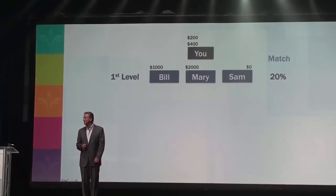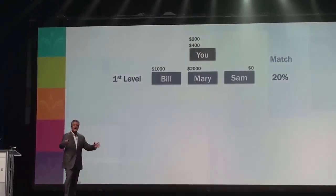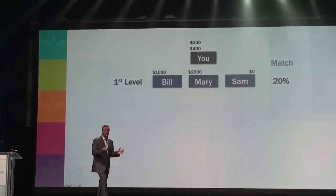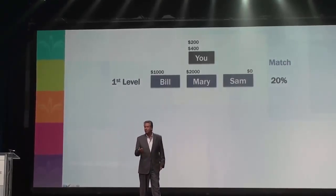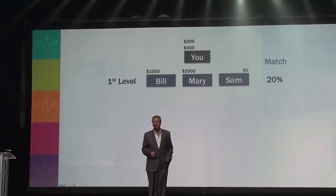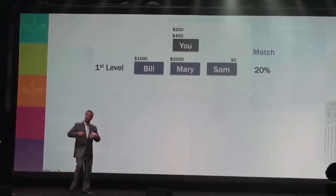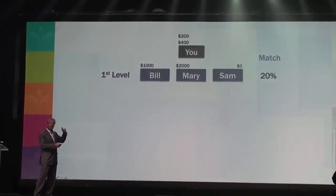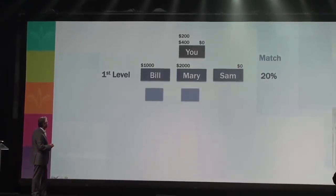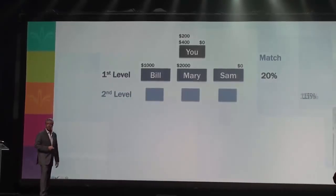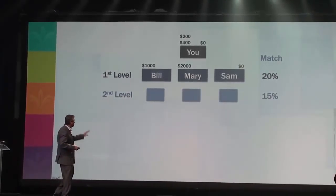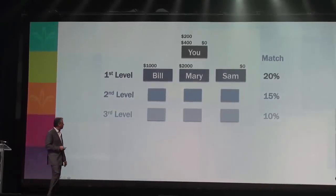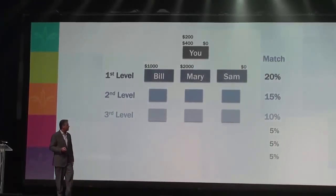Is there any limit to the number of people you can personally sponsor? No. If you personally sponsored 50 people, you get 20% of 50 checks every week. But it doesn't stop there. Bill, Mary, and Sam are all personally sponsoring people — those fall on your second level of match. You get 15% of all their checks every week. Those people are sponsoring people — that falls on your third level of match, where you get 10% of all their checks. The company pays a seven-level matching check bonus program.